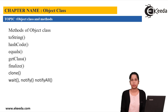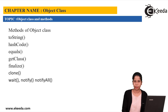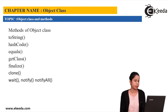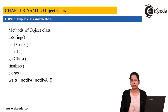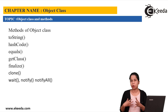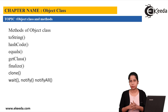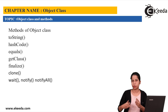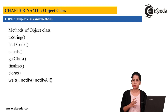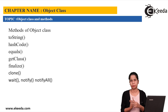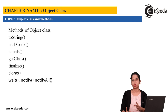Finalize — we have already seen the finalize() method in the garbage collection topic, just as a revision. The finalize() method is called by the JVM automatically whenever the garbage collector is about to get invoked. What finalize() does is the job of resource deallocation — if you have some resources open, you can close them inside this finalize() method. It is implicitly called by the JVM, and it releases all bound resources before garbage collection is invoked.